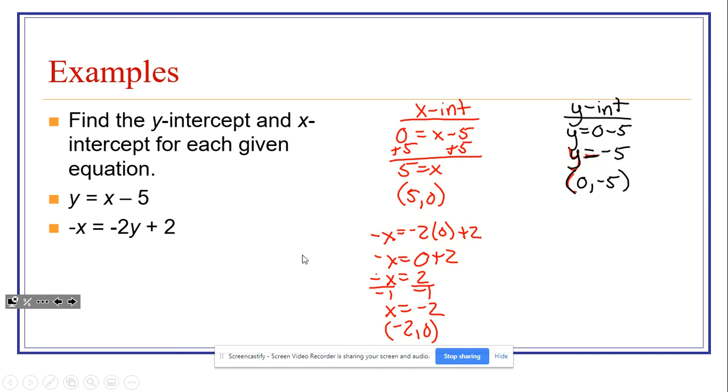For the Y-intercept, we go with zero, because negative zero is just simply zero, equals negative 2Y plus 2. We'll subtract 2 from both sides to get negative 2 equal to negative 2Y. Divide by negative 2, and 1 equals Y. So the Y-intercept point is going to be 0, 1.